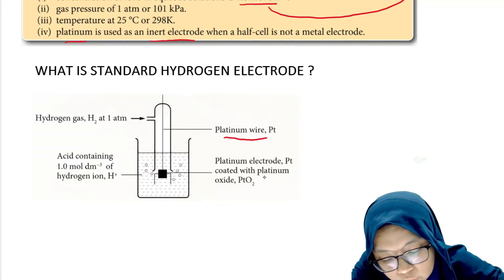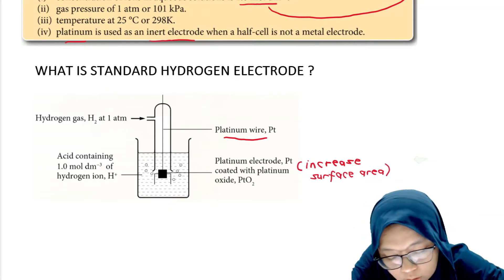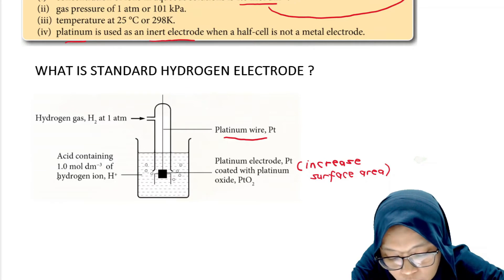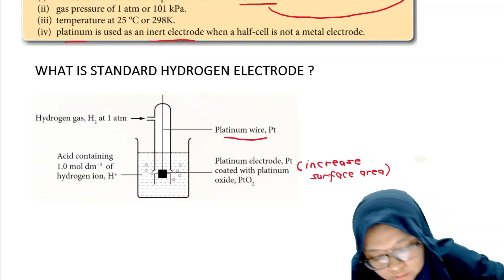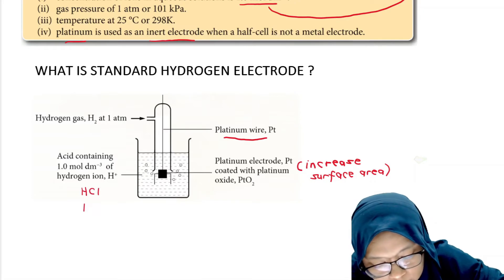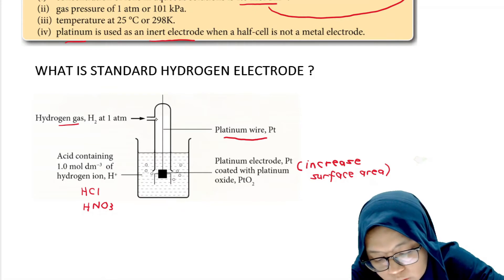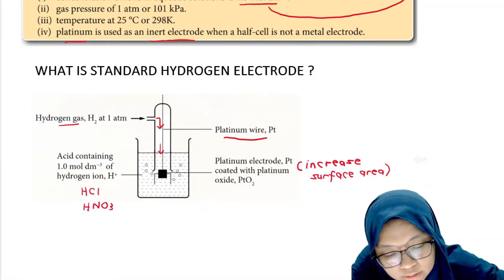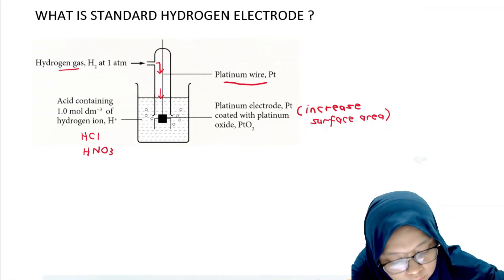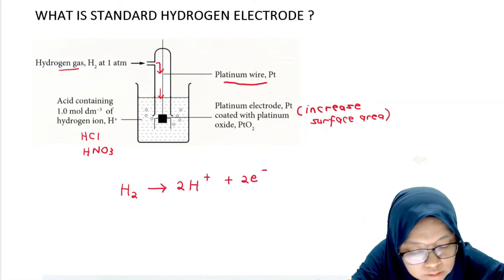Since we are not using a metal electrode, we replace it with platinum wire because it is an inert electrode. The platinum electrode is coated with platinum black to increase the surface area for the reaction. The aqueous solution is an acid containing 1 mol dm⁻³ of hydrogen ion — you can use hydrochloric acid or nitric acid as long as the concentration is 1 mol dm⁻³. Hydrogen gas is also supplied into the test tube and will be involved in the half cell reaction.